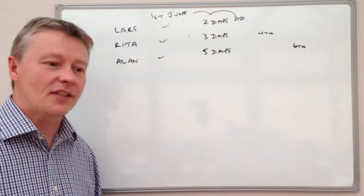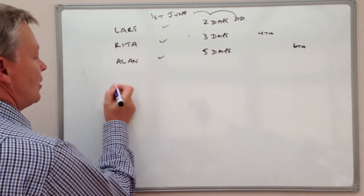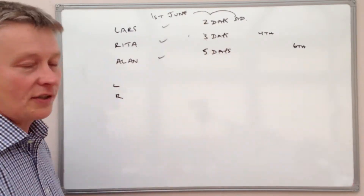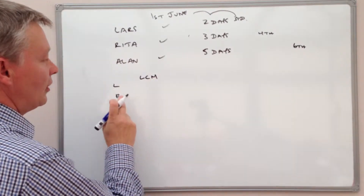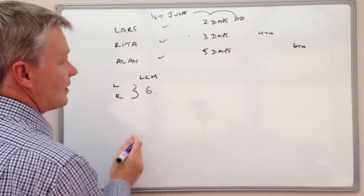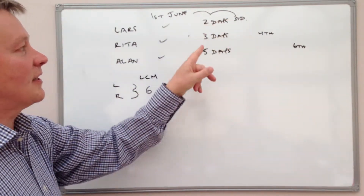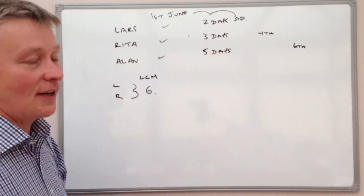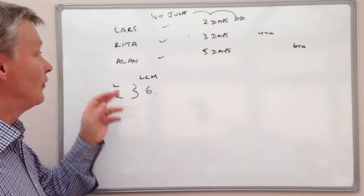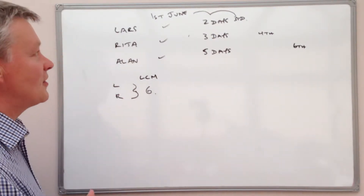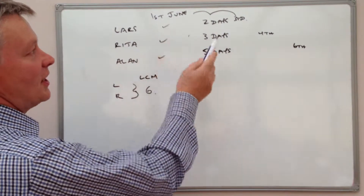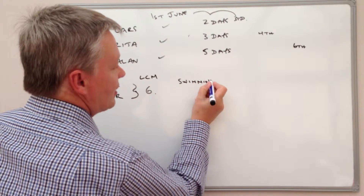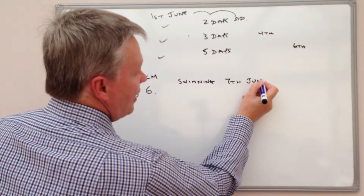The first part of the question is: when will Lars and Rita next go swimming together? Lars goes every two days and Rita goes every three days. So the lowest common multiple of 2 and 3 is 6 — writing out the multiples of the 2 times table and the 3 times table, you get to 6. So the next time they will go swimming together will be 6 days from the 1st of June, which is the 7th of June.